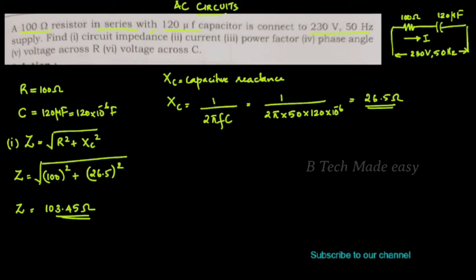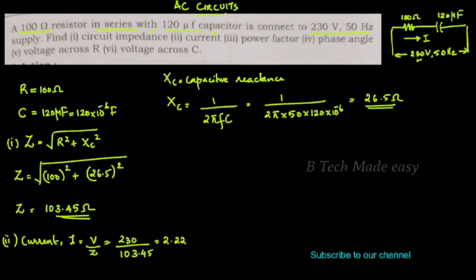Next, we have to find the current. Current I = V / Z. The supply voltage is 230 V and Z = 103.45 ohms. So current I = 230 / 103.45 = 2.22 amperes.